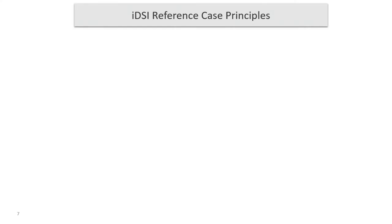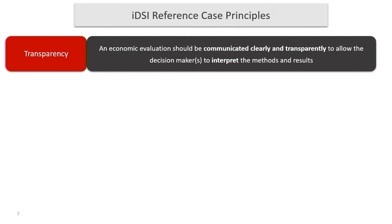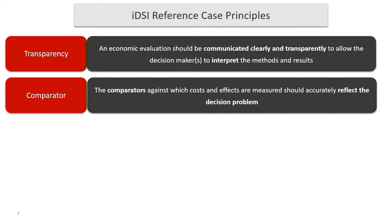These are all the reference case principles. Right at the top was transparency, which was actually a surprise to the workshop. We asked all the users to get together and say what are the key principles, and at the top of everyone's list was transparency. Comparators against which costs and effects are measured should accurately reflect the decision problem — a lot of these principles always go back to the stated decision problem.